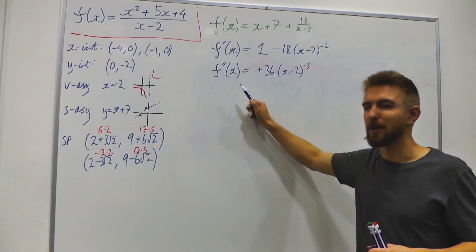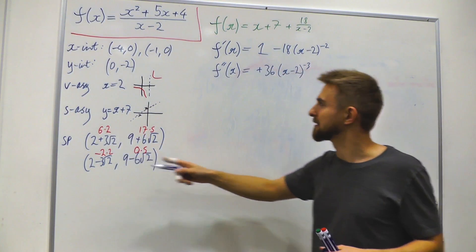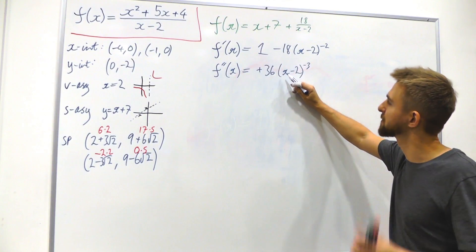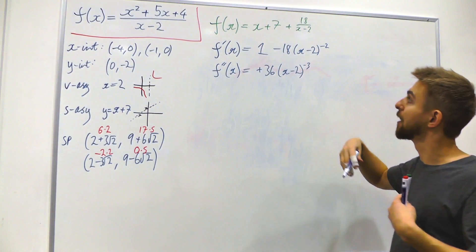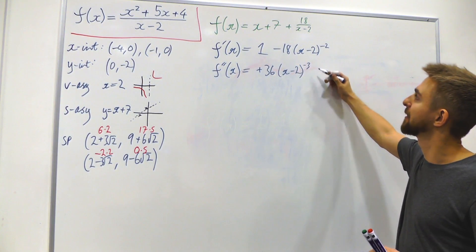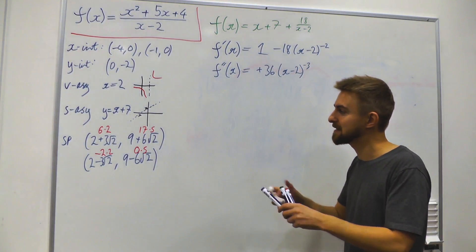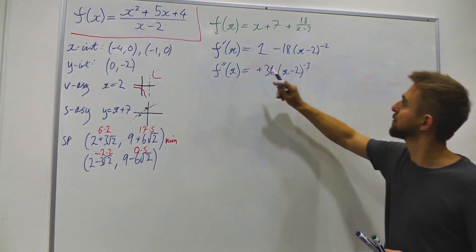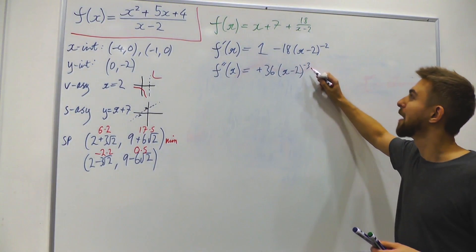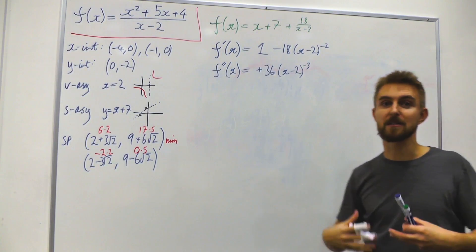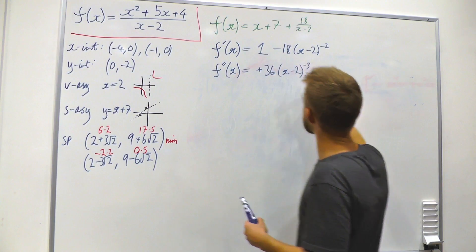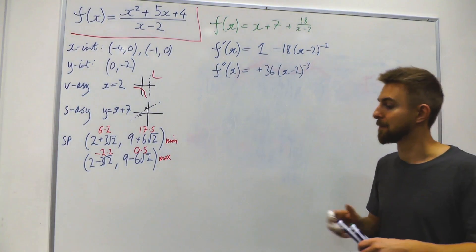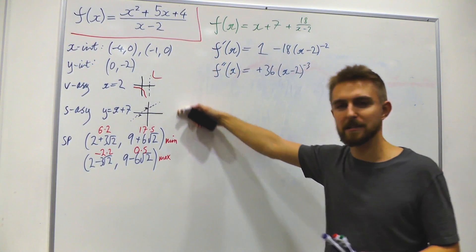Evaluating the second derivative at each stationary point: at x ≈ 6.2, (6.2 − 2) ≈ 4, a positive number; a positive number to any exponent stays positive, so f″ > 0 — this is a local minimum. At x ≈ −2.2, (−2.2 − 2) ≈ −4, a negative number with an odd exponent stays negative, so f″ < 0 — this is a local maximum.